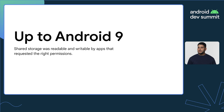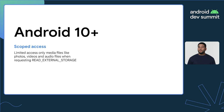After Android 9, files in the shared storage were readable and writable by apps that requested the right permissions. On Android 10, we released a major privacy upgrade regarding shared files access named scoped storage. When an app requests read external storage on this version, access to shared storage is restricted to media files like photos, videos, and audio files.